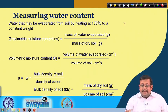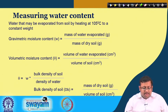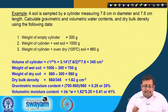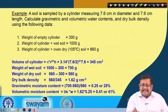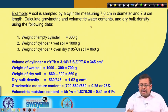These two methods are direct methods for measurement of water content. Let us see one example. A soil is sampled by a cylinder measuring 7.6 centimeter in diameter and 7.6 centimeter in length. Calculate gravimetric and volumetric water contents and dry bulk density using the following data.